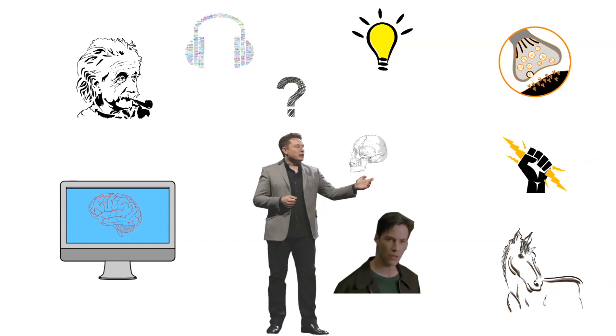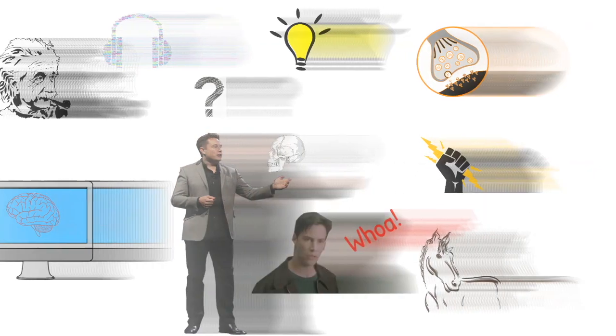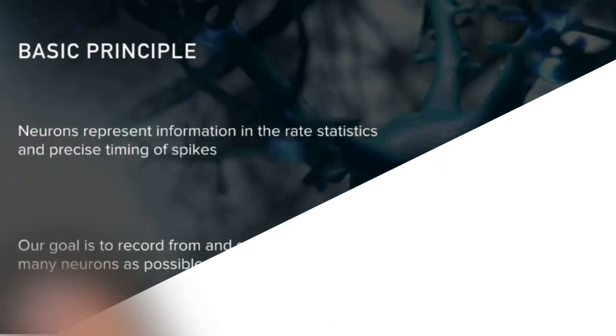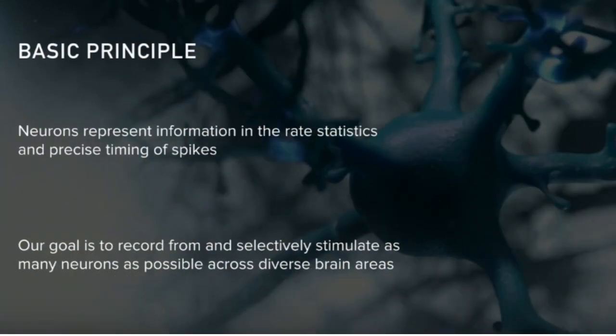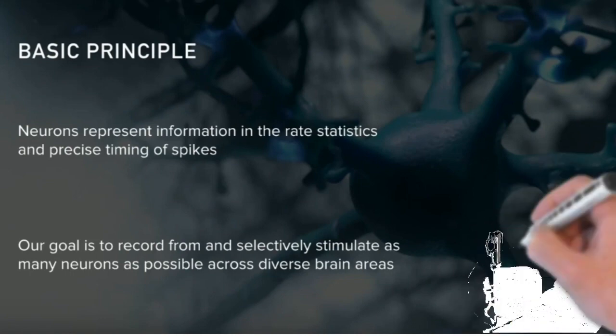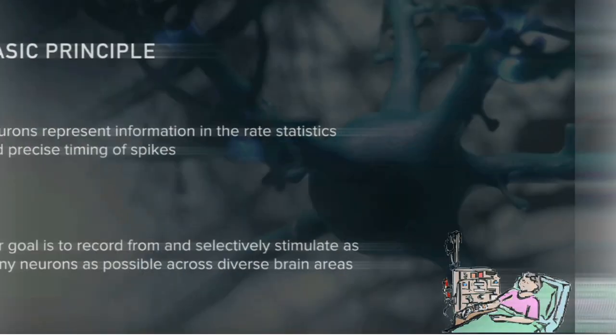But these are all impulses from neurons, what's called a spike. Our goal is to record from and stimulate spikes in neurons, and do so in a way that is orders of magnitude more than anything that's been done to date, and safe, and good enough that it's not like a major operation.